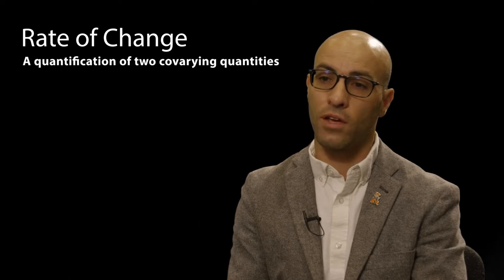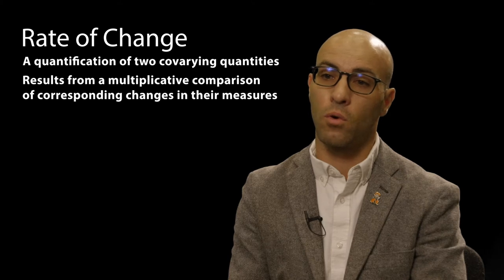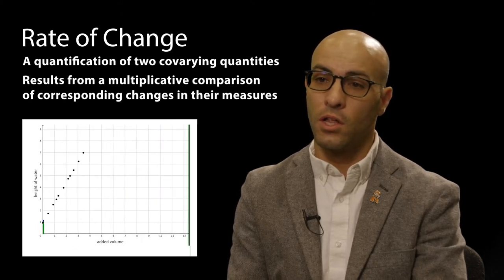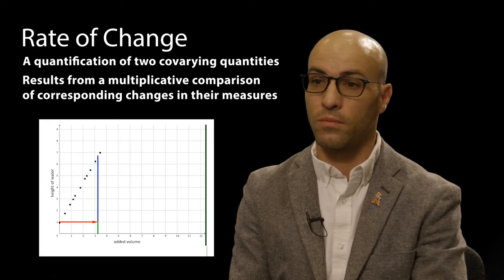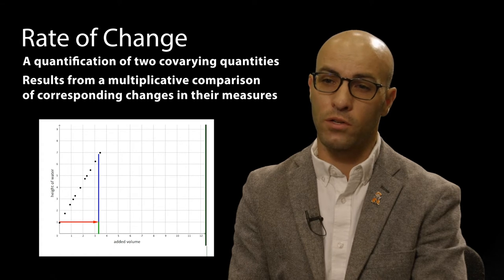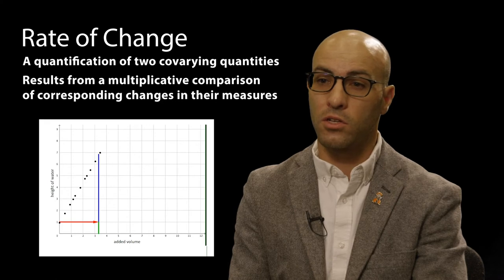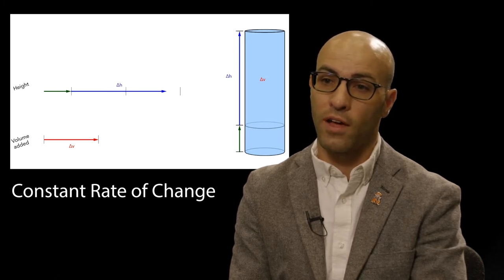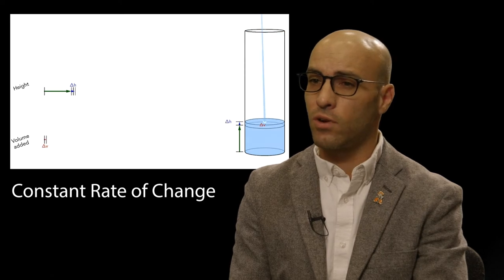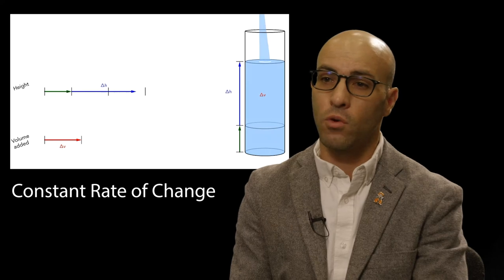Rate of change is a quantification of two co-varying quantities and results from a multiplicative comparison of corresponding changes in their measures. The rate of change is constant if corresponding changes in the quantities' measures are proportional. Constructing a quantitative understanding of constant rate of change requires students to construct changes in quantities' values as quantities themselves, and then to abstract an invariant multiplicative relationship between corresponding changes in the quantities' values.